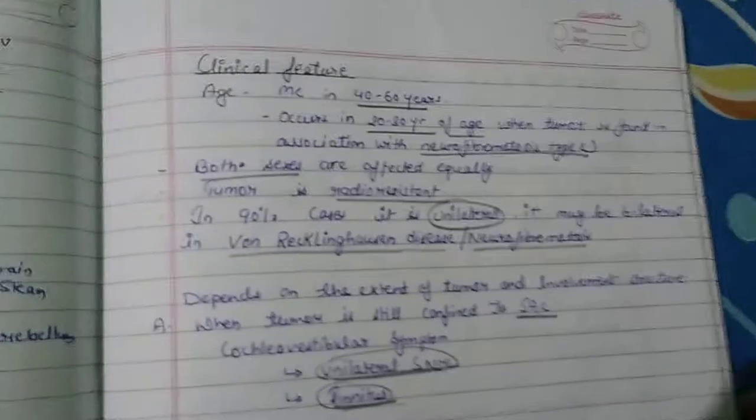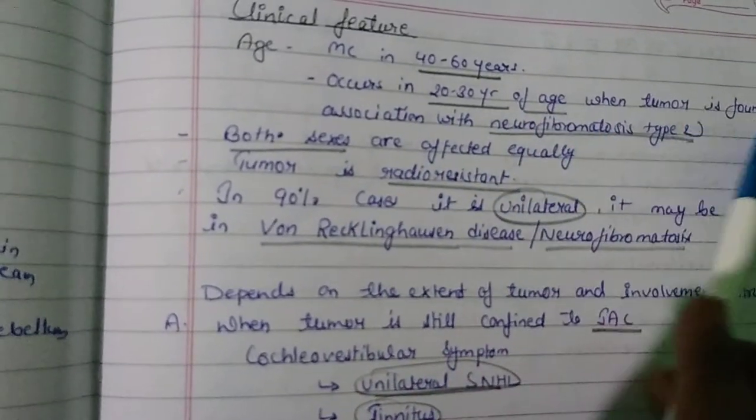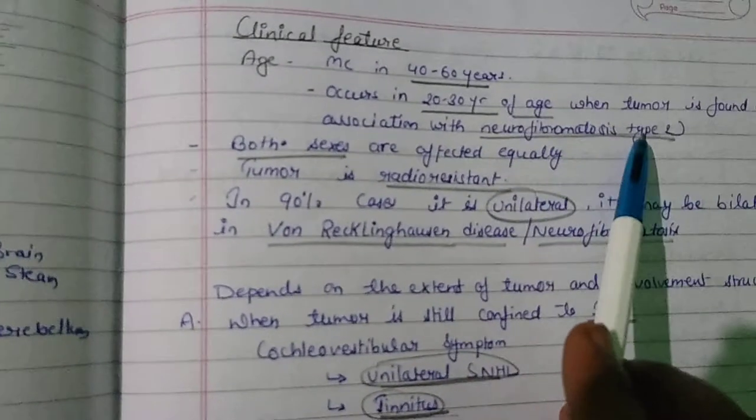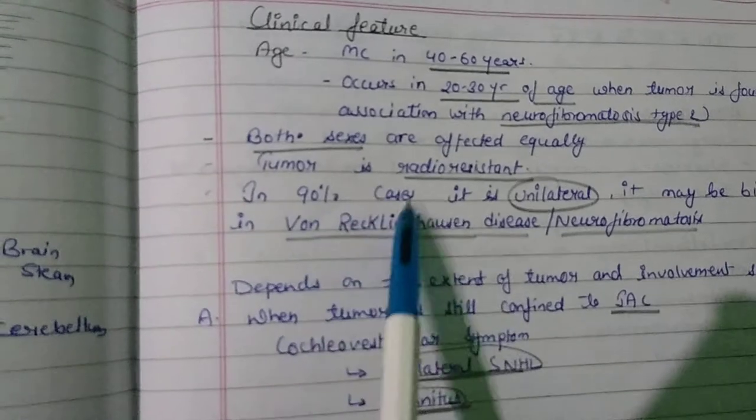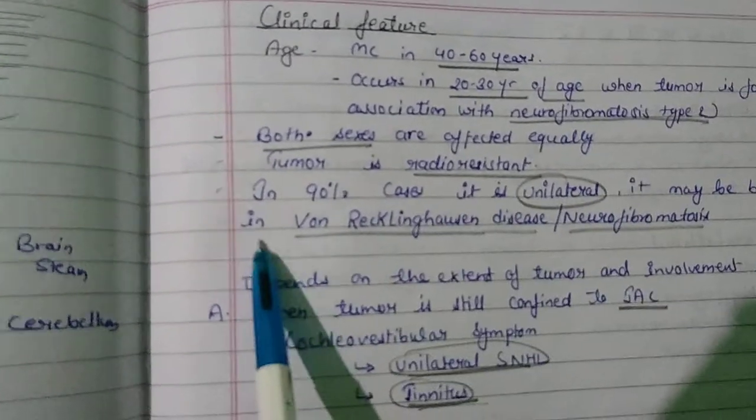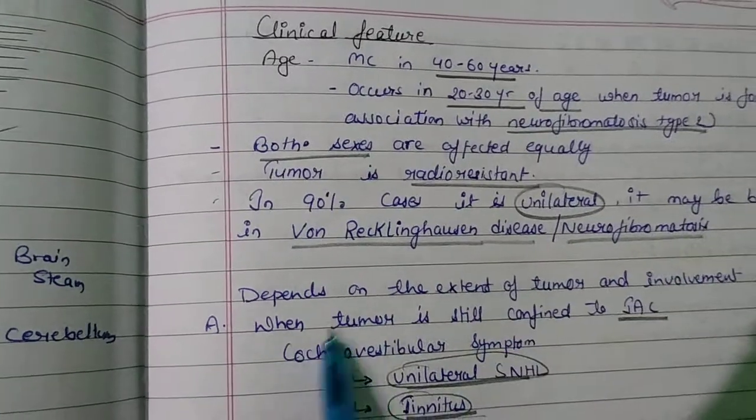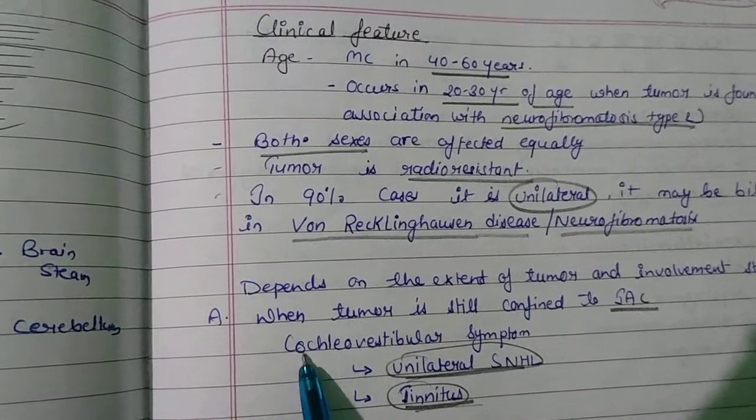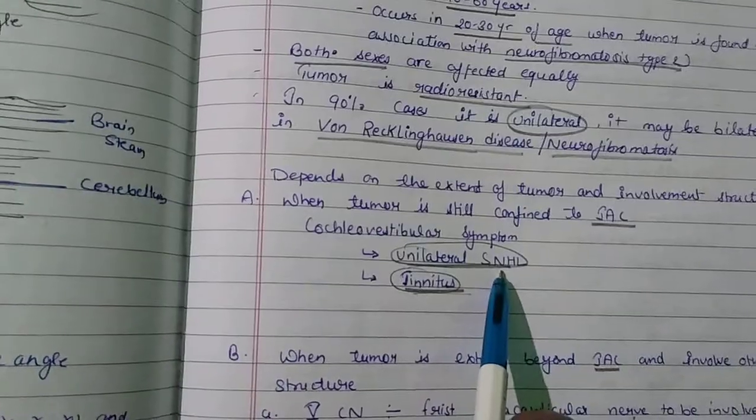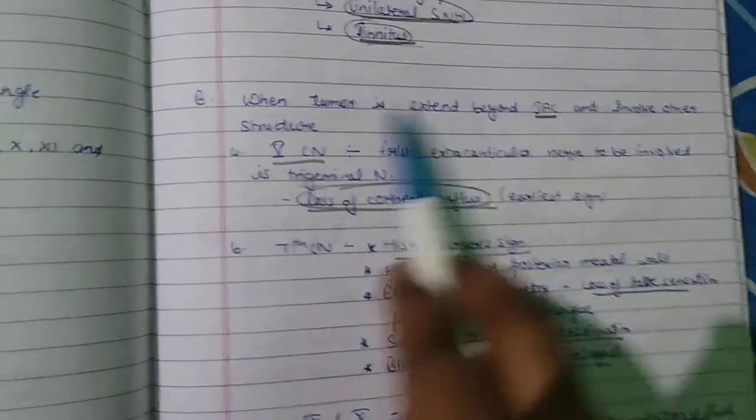Clinical features: most common in 40 to 60 years age, occurs in 20 to 30 years when tumor is associated with Neurofibromatosis type 2. Both sexes affected equally. Tumor is radio-resistant. In 90% of cases it is unilateral, may be bilateral in Von Recklinghausen's disease. When tumor is still confined to internal acoustic canal, presents with cochlear vestibular symptoms: unilateral sensorineural hearing loss and tinnitus.